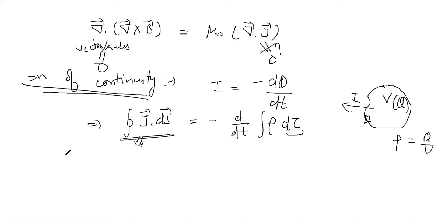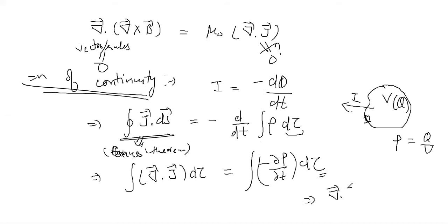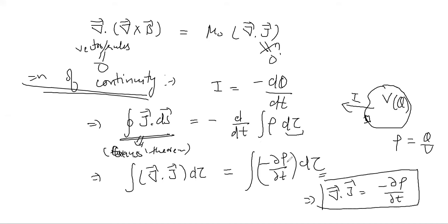Applying the fundamental theorem for divergences — Gauss's theorem — you can convert the surface integral to a volume integral. Then you can take the time derivative inside the integral since time and space coordinates are independent, giving you del dot J equal to minus partial rho by partial t. This means del dot J is not equal to zero universally.